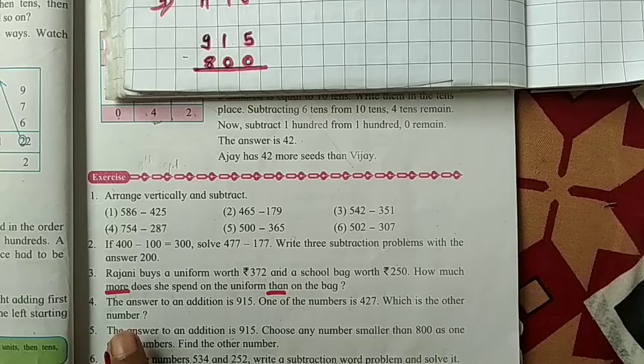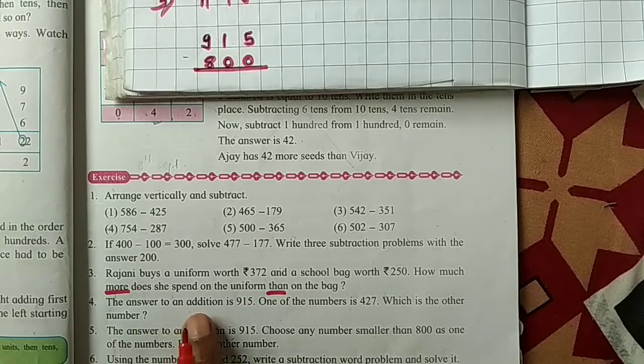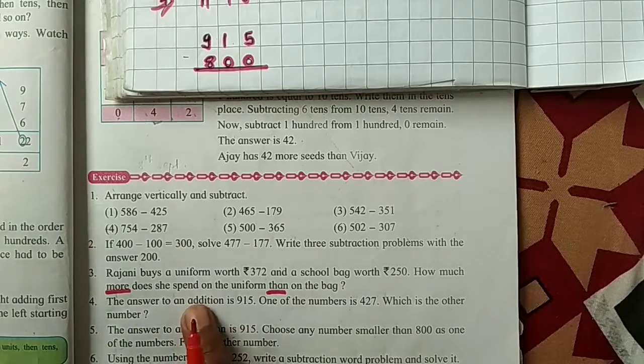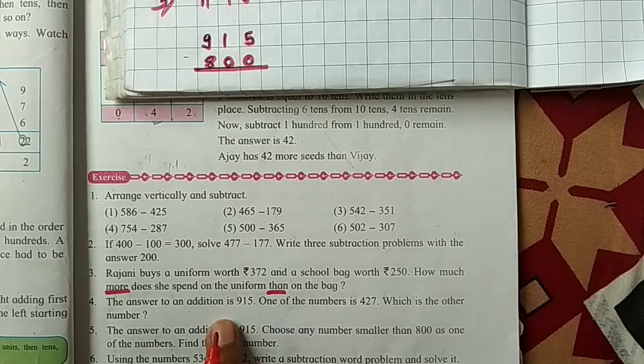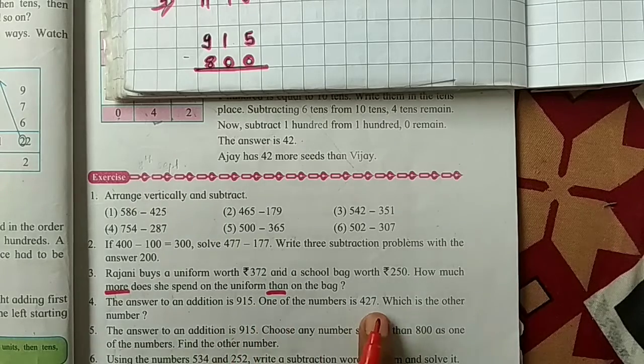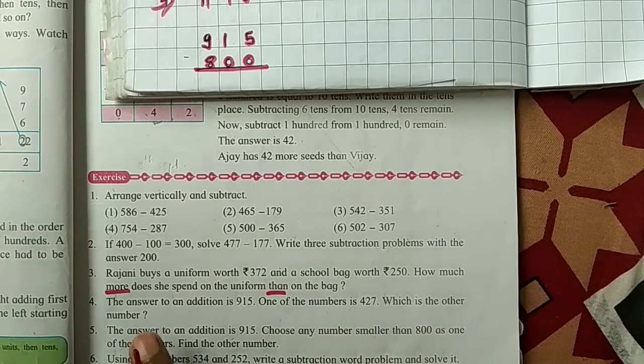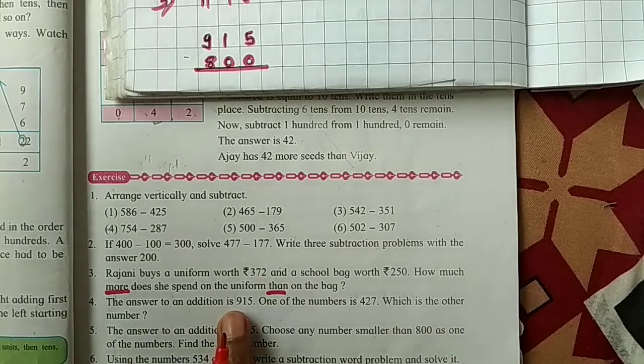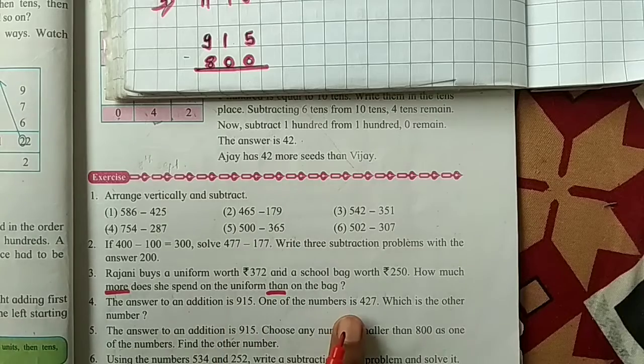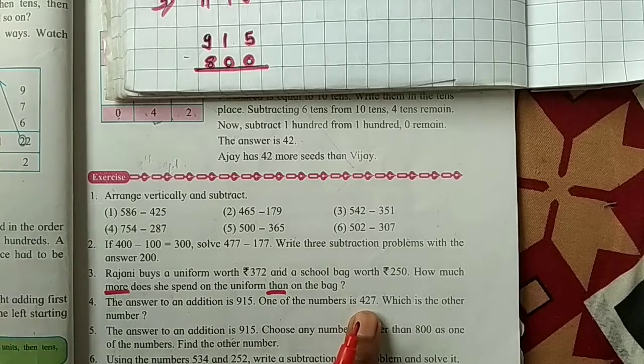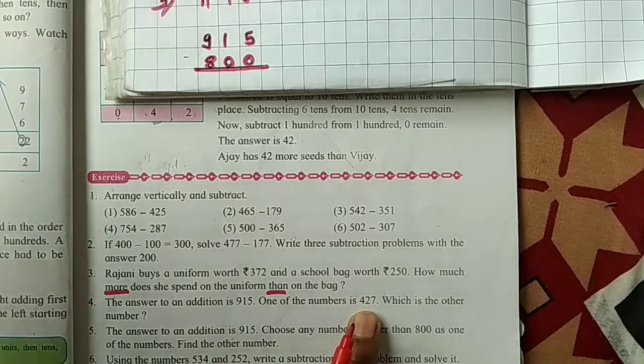Question number 4. The answer to an addition is 915. One of the number is 427. Which is the other number? Here we're given two numbers addition answer and also given one number. Now we will find another number of that addition.